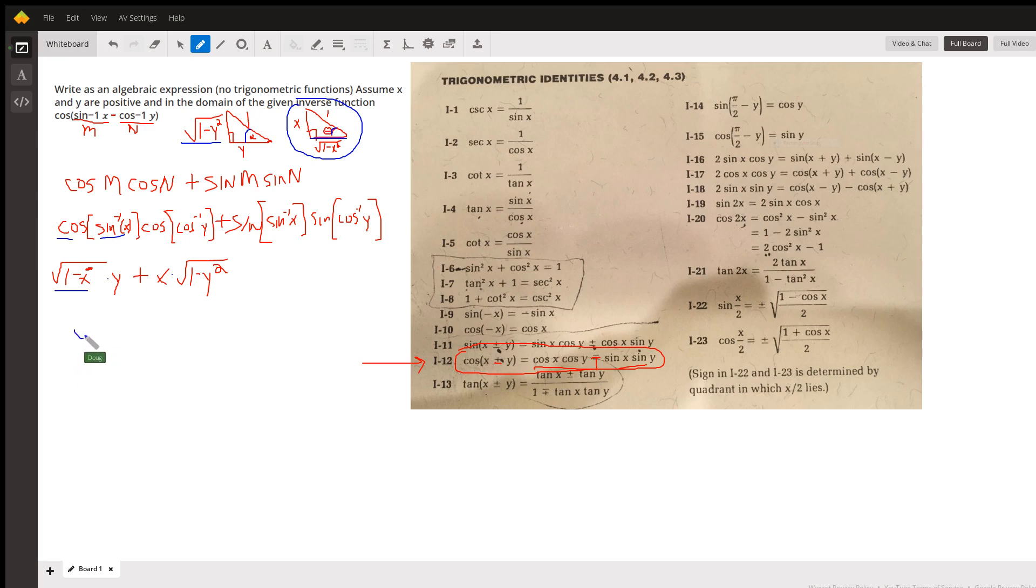So I could rewrite this finally as Y times the square root of 1 minus X squared plus X times the square root of 1 minus Y squared. And that satisfies the directions. No trigonometric functions. Assume X and Y are positive in the domain of the given inverse function. That means we're in the first quadrant.